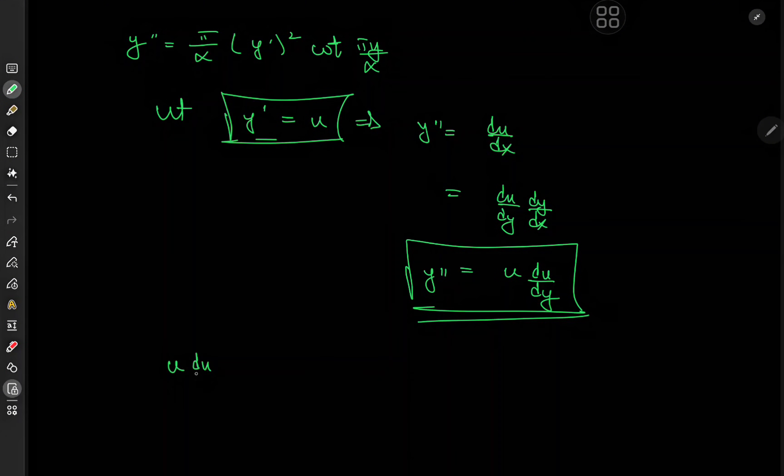We now have u times du over dy equal to pi over alpha times u squared times the cotangent of pi y over alpha. Now if we expand using 1 over u squared, which should not be much of a big deal, we assume u here is non-zero. But that implies that y prime is non-zero, and y prime equaling zero just means that y is a constant, and so we're not exactly missing out on any interesting solutions anyway.